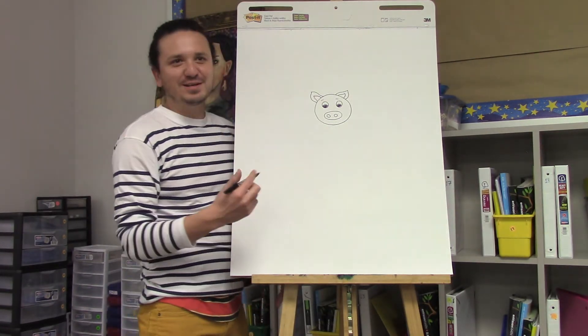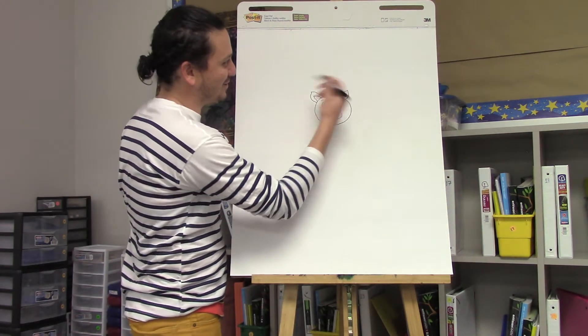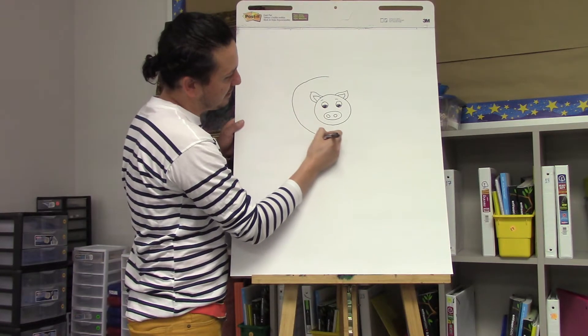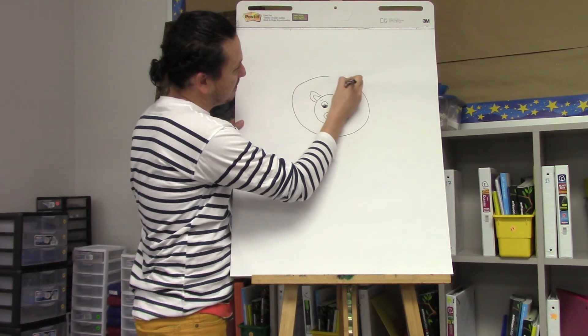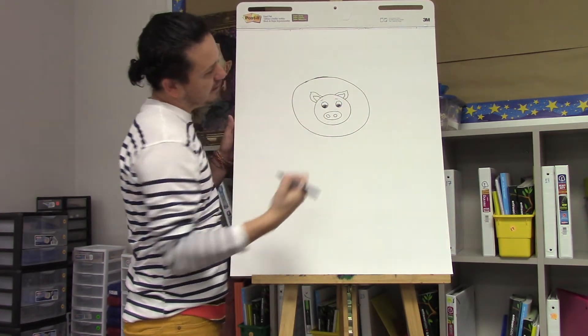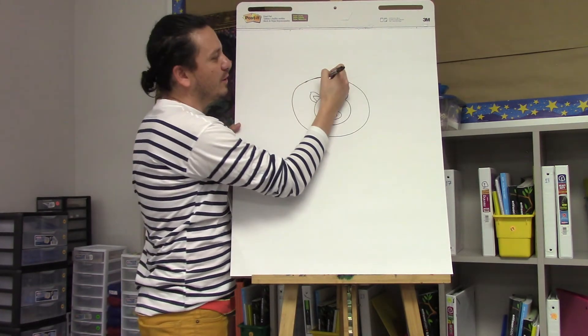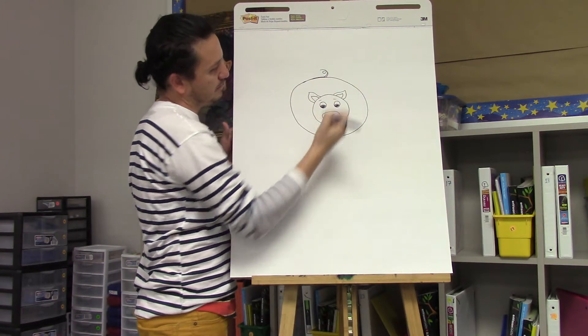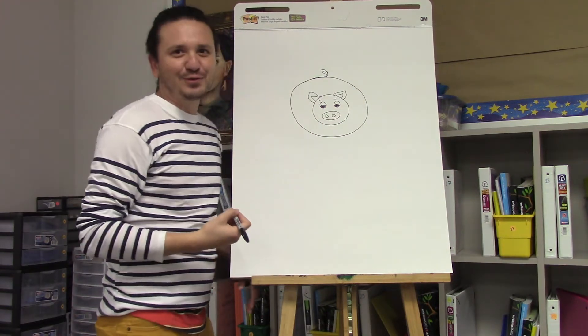Next we're going to do the body. You're going to make an even bigger circle because this right here is a chubby pig. And then add his little curly tail. He looks like a balloon, right?